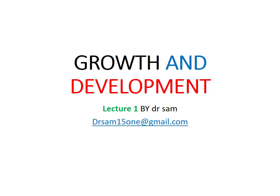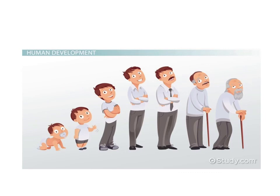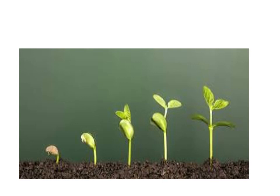Welcome to our second Form 6 topic: growth and development. This is Lecture 1 by Dr. Sam. In the diagram you see the process of growth. We are human beings — we start from when we are an infant and grow to adult. A new plant also illustrates the process of growth and development; it starts from the seed, the seed germinates, and finally it forms the mature plant. That is the process of growth and development.